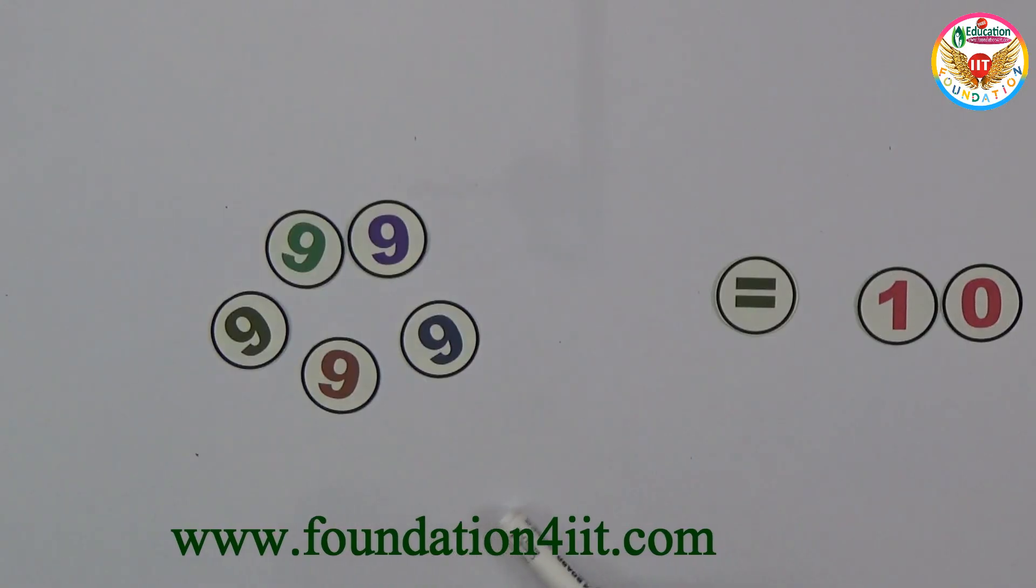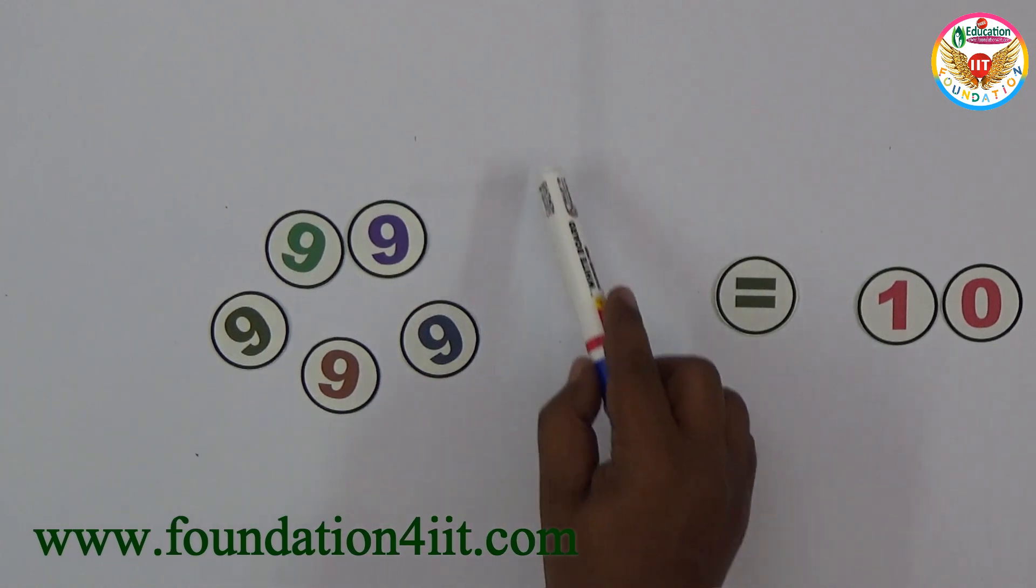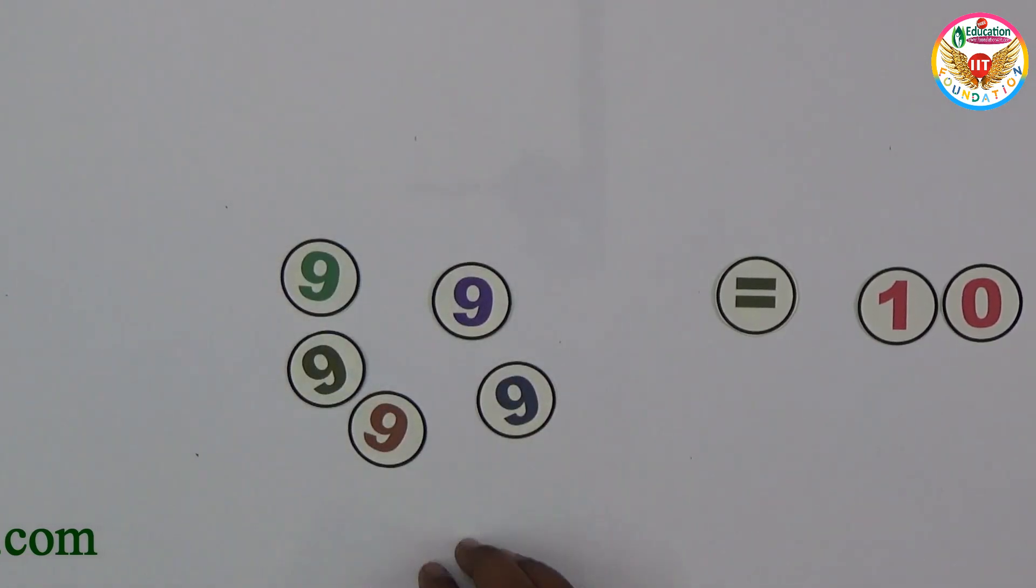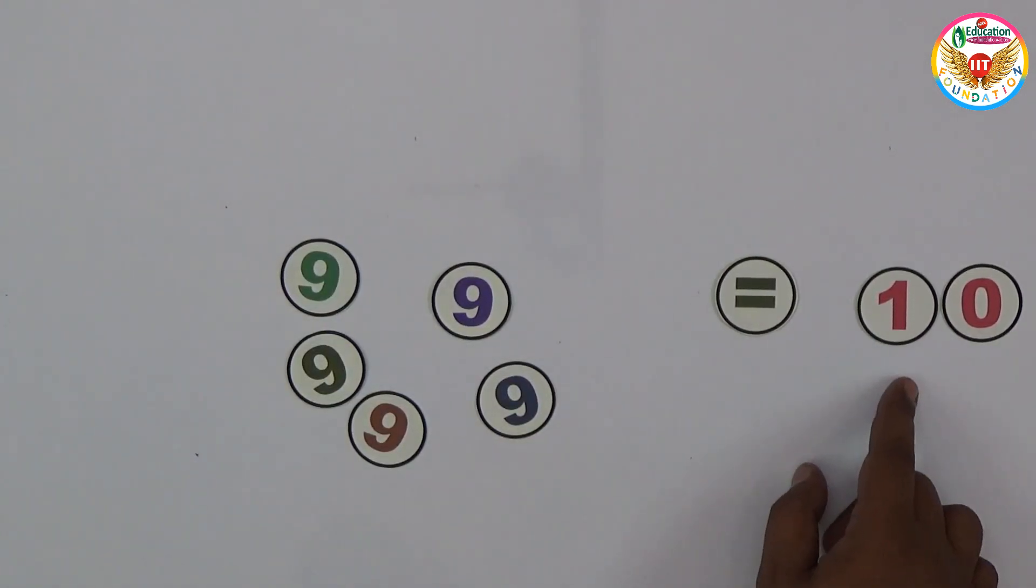So here is a solution to obtain 10 by using five 9's. I'll show three more solutions in this case. To get 10 using five 9's, we can take 11 - 1 = 10.